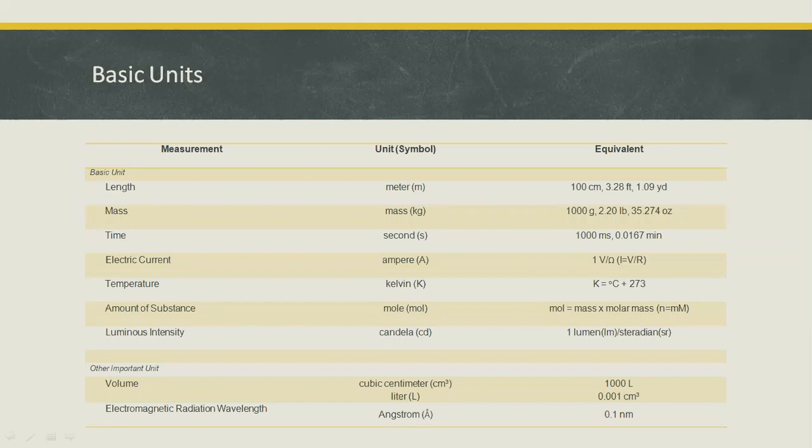The metric system is the main system of measurement units used in science. Each unit is considered to be dimensionally independent of the others. Listed in the table are the seven basic units: length, mass, time, electric current, temperature, and amount of substance.